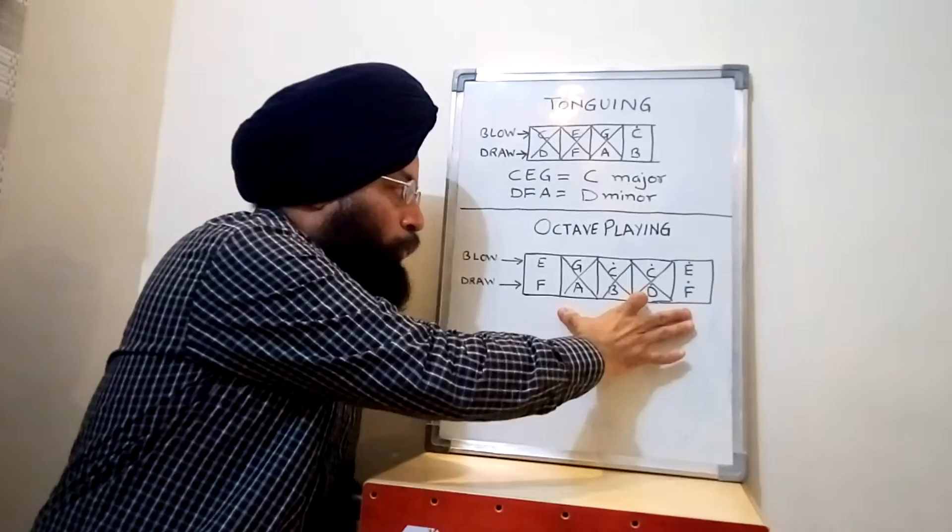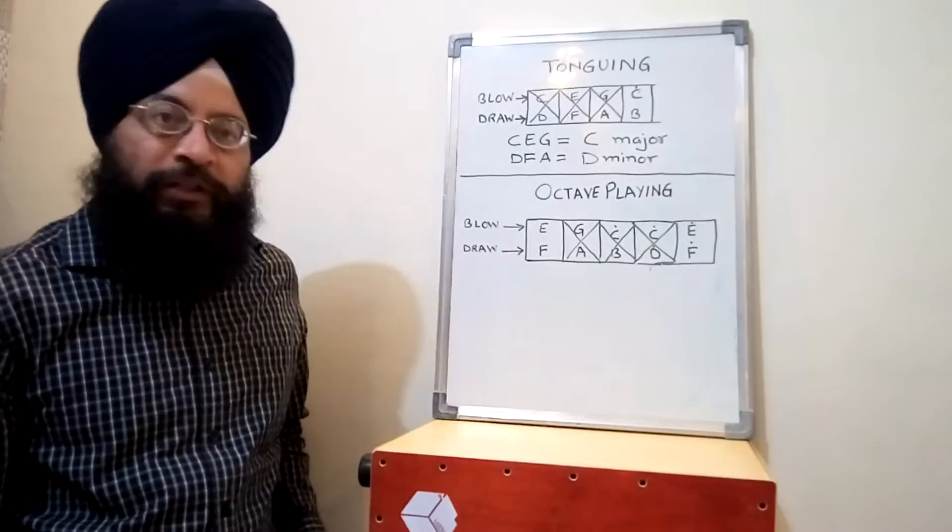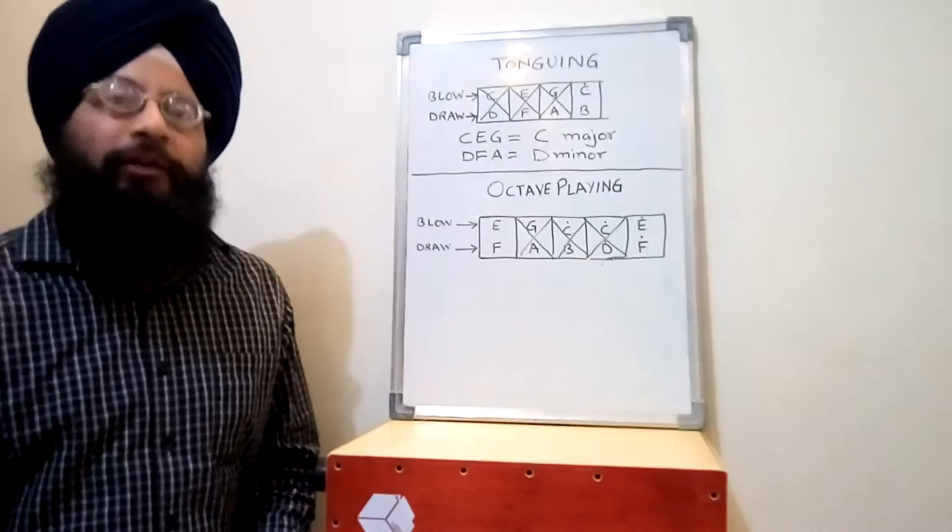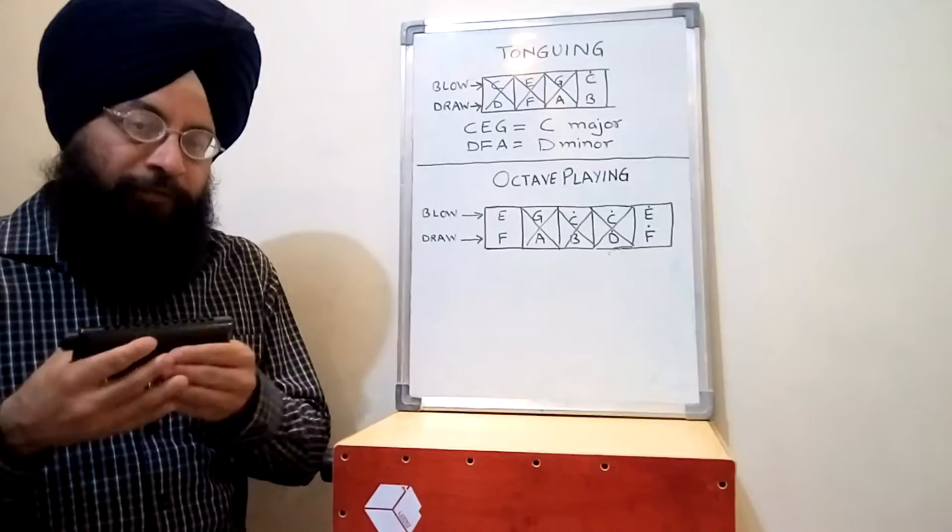That also produces a very beautiful effect, especially when you are playing a song. You can play the lyrics by using the single notes, and the intermediate interludes or preludes you can play with the help of octave playing. Again, I will be demonstrating one very simple example of sare gama, it goes like this: